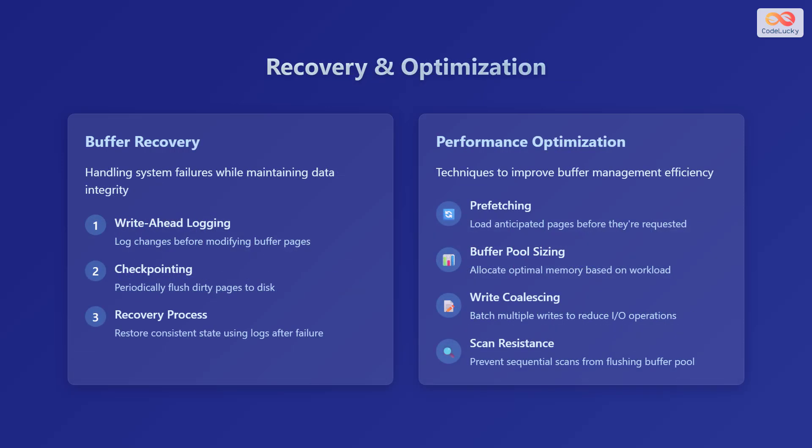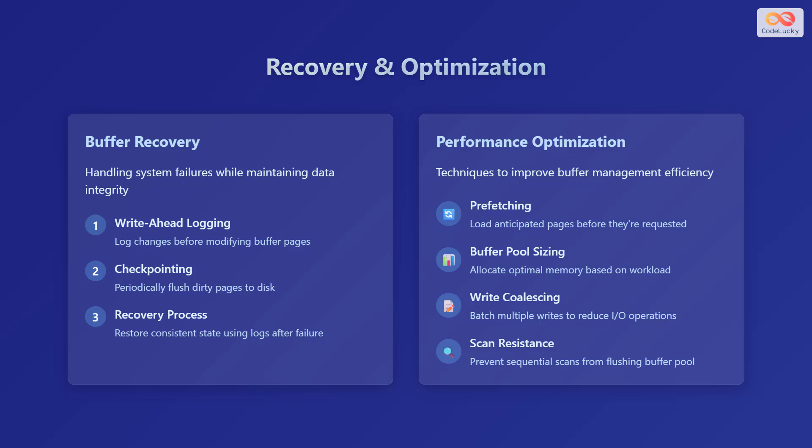Now, let's discuss recovery and optimization in buffer management. Recovery refers to handling system failures while maintaining data integrity. To achieve this, we can use write-ahead logging, or WAL, which means logging changes before modifying buffer pages. We can also use checkpointing, which involves periodically flushing dirty pages to disk, creating a consistent snapshot of the database. The third step is the recovery process, which means restoring a consistent state using logs after a failure.